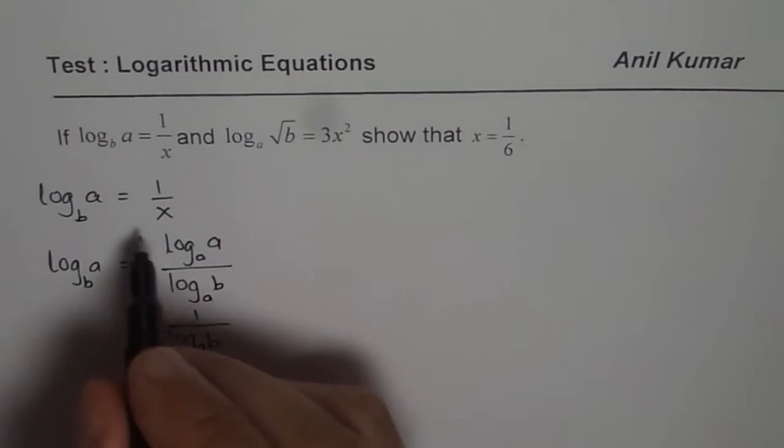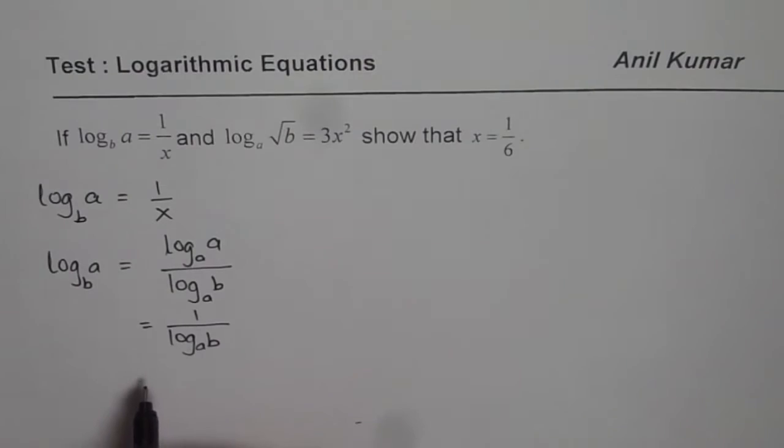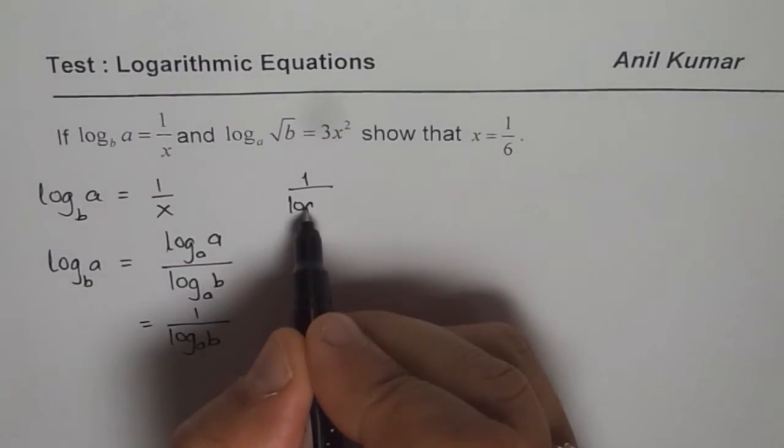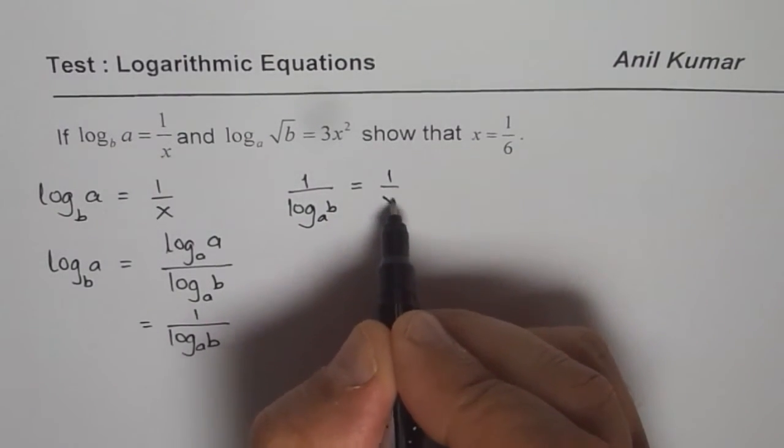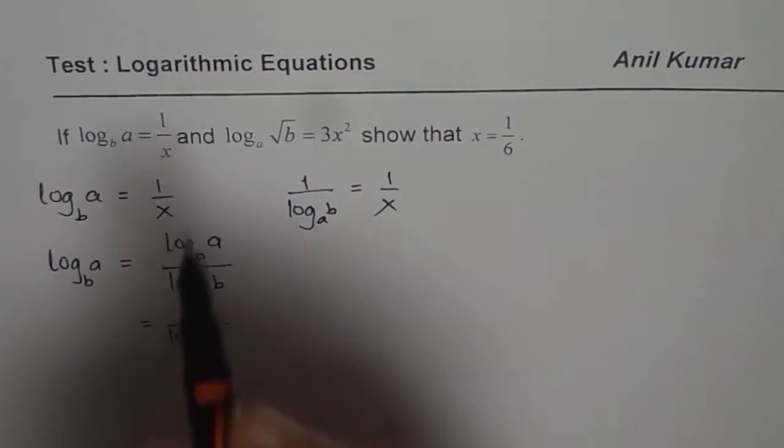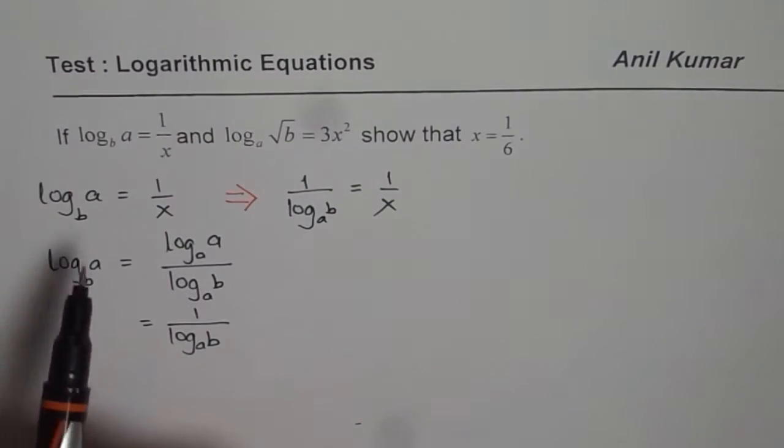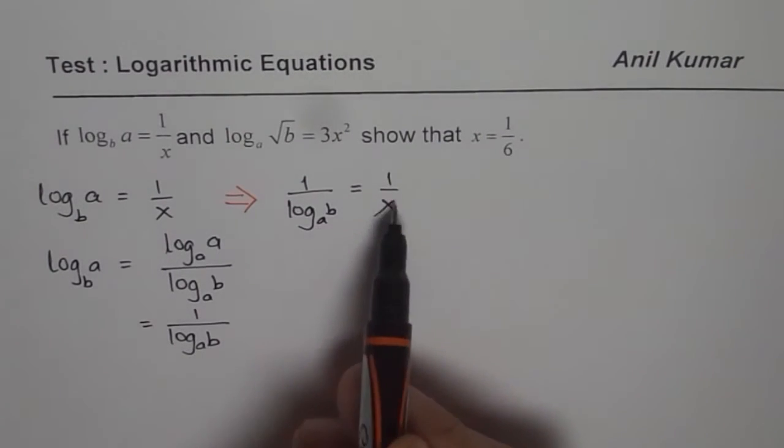Let me rewrite this. I could write this as 1 over log a of b equals 1 over x. So we are saying, now we know log b of a is 1 over log a of b. So 1 over log a of b is 1 over x.